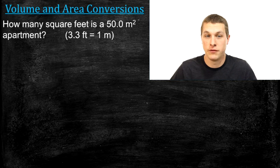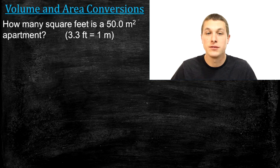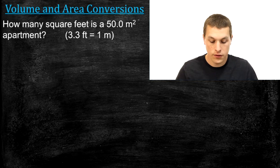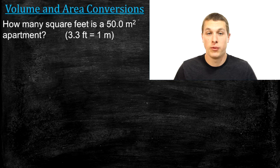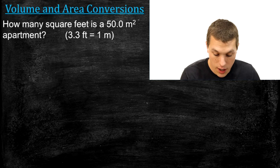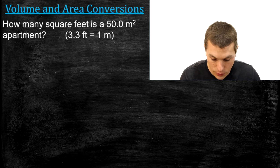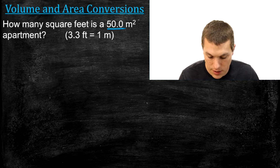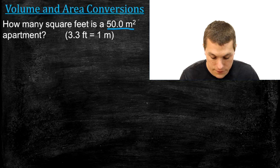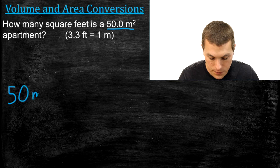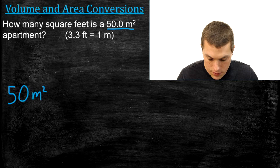On the next slide I'll show you three steps to solve these problems, but on this first slide I'm just going to walk through the conversion so we understand why we use those steps. We start this conversion the same way we start all other conversions — by writing out our starting quantity and ending units. We're starting with 50 meters squared and trying to go to feet squared.